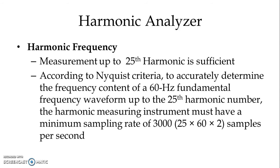According to the Nyquist criteria, to accurately determine the frequency content of a 60 Hz fundamental frequency waveform up to the 25th harmonic, the harmonic measuring instrument must have a minimum sampling rate of 3000 samples per second. That is the 25th harmonic multiplied by 60 Hz fundamental frequency, doubled — giving 3000 samples per second.